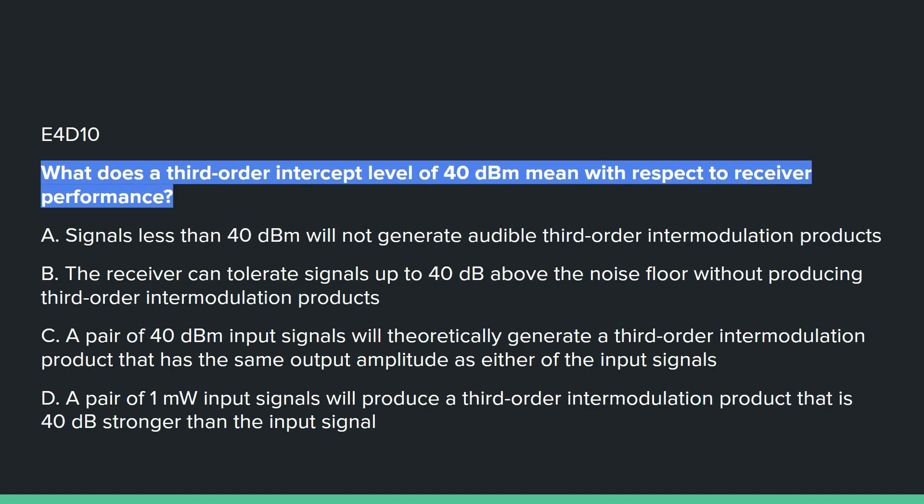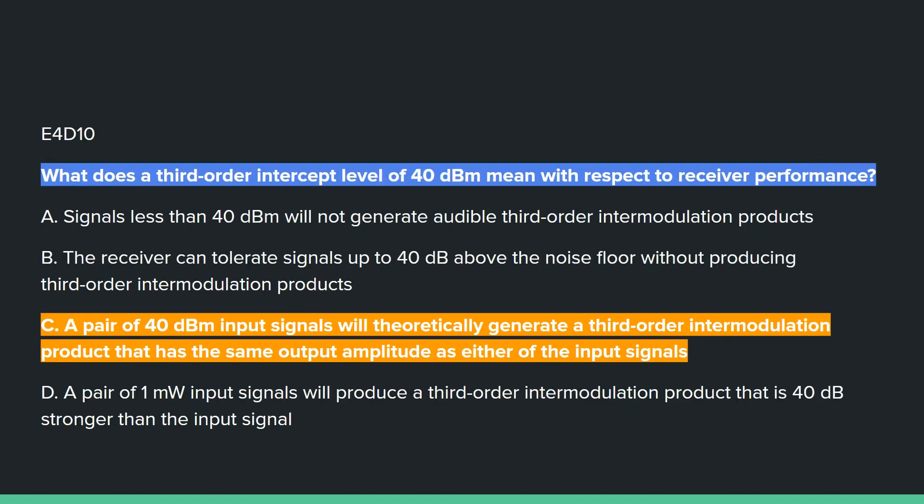E4D10: What does a third-order intercept level of 40 dBm mean with respect to receiver performance? Answer C: a pair of 40 dBm input signals will theoretically generate a third-order intermodulation product that has the same output amplitude as either of the input signals.